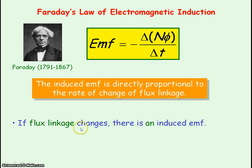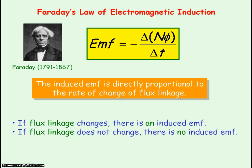If flux linkage changes for a coil of wire, then there will be an induced EMF. If the magnet is stationary inside the coil of wire, the flux linking the coil will not be changing, and so there will be no EMF induced across the ends of the coil. To summarize: to induce an EMF, you need relative motion between a conductor and magnet. Either move a single wire so it cuts the magnetic field lines, or to produce a much larger EMF, move a magnet inside coils of wire so that the flux linking the coils changes.